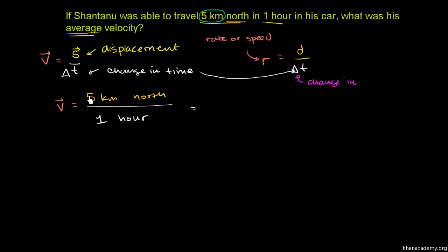So this is equal to, if you just look at the numerical part of it, it is 5 over 1 kilometers. And you can treat the units the same way you would treat the quantities in a fraction. 5 over 1 kilometers per hour. And then to the north. Or you could say this is the same thing as 5 kilometers per hour to the north. So that's his average velocity, 5 kilometers per hour. And you have to be careful. You have to say to the north if you want velocity. If someone just said 5 kilometers per hour, they're giving you a speed, or a rate, or a scalar quantity. You have to give the direction for it to be a vector quantity.